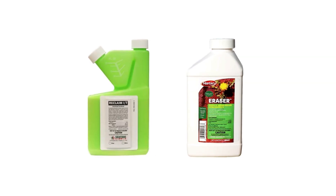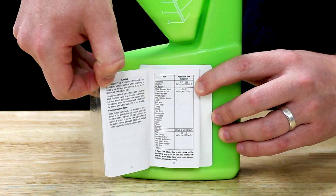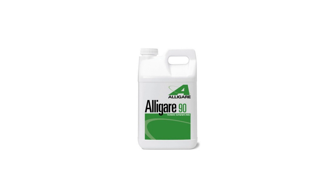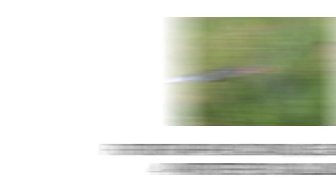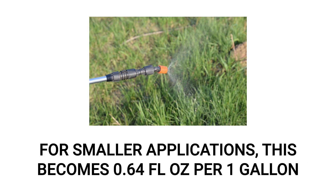Just be sure to treat the undersides of plants as well. Different pesticides and surfactants will have different instructions and mix rates, so be sure to read the product labels to get exact directions and values. We recommend you use Allagair 90 Surfactant Wetting Agent. This product is a non-ionic, low-foam surfactant used to help pesticides spread evenly on surface areas for maximum results. For turf applications, Allagair 90 is labeled to use at most 4 pints per 100 gallons of spray dilution, which translates to 0.64 fluid ounces per one gallon of water for smaller applications. To make measurements simpler, you may use 0.5 fluid ounces.